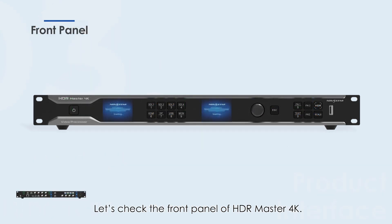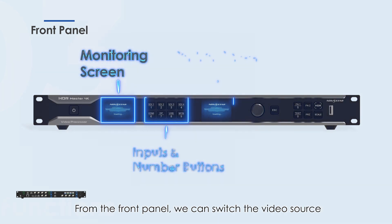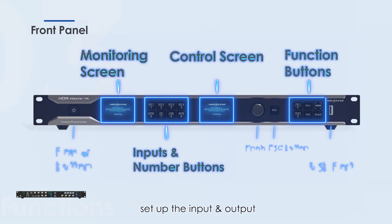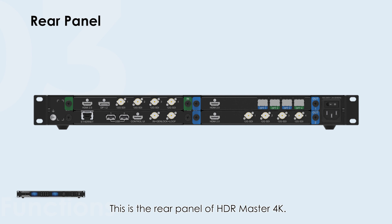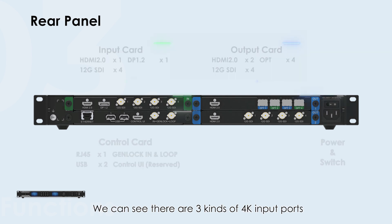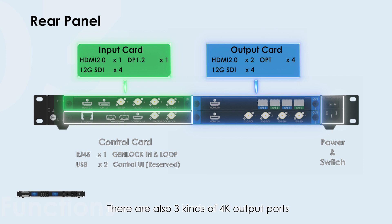Let's check the front panel of the HDR Master 4K. From the front panel, we can switch the video source, set up the input and output, monitor the screens, load the BKG, and so on. This is the rear panel of HDR Master 4K. We can see there are three kinds of 4K input ports: HDMI 2.0, DP 1.2, and 12G-SDI. There are also three kinds of 4K output ports: HDMI 2.0, 12G-SDI, and optical port.